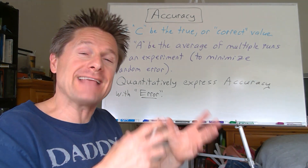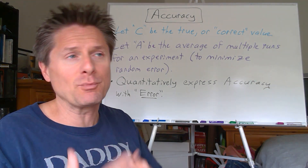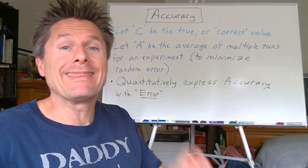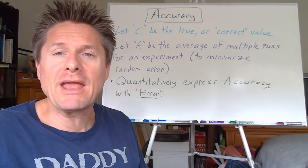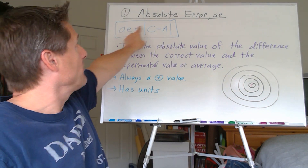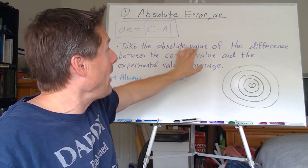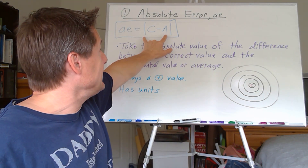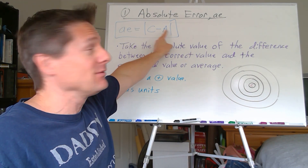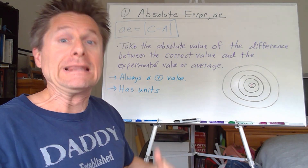We're going to express accuracy mathematically using a concept called error. There are two types: absolute error — how far you are from the true value — and relative error, which is the one I'll be grading you on. Absolute error: take the true value C minus your experimental value or average A, and take the absolute value of that difference so it's always positive.